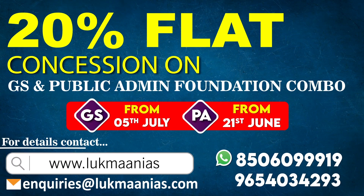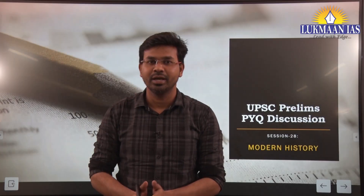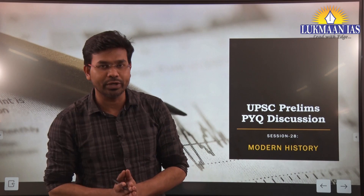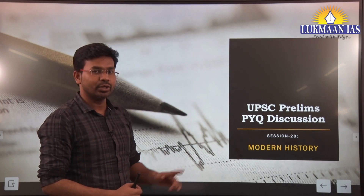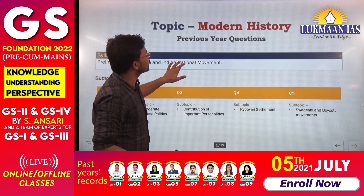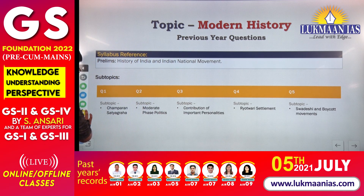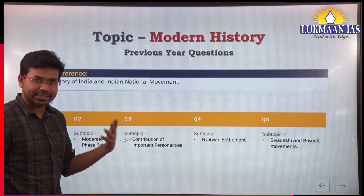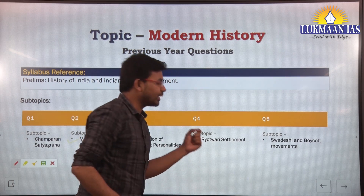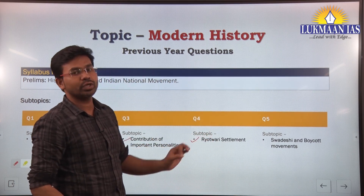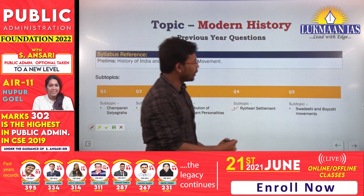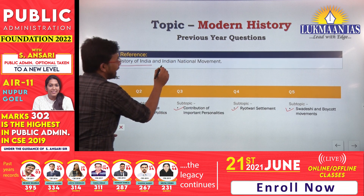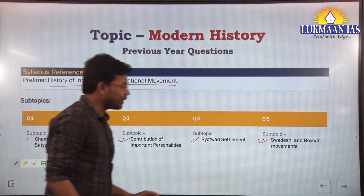Welcome to this series where we are discussing previous year questions of UPSC Prelims examination. Today we are going to analyze some important questions from Modern Indian History. Topics we will cover include Champaran Satyagraha, the moderate phase of politics, contributions of important personalities in the Indian freedom struggle, Ryotwari settlement system, and Swadeshi and Boycott movements — all part of the UPSC Prelims syllabus on History of India and Indian National Movement.